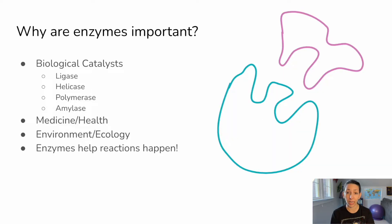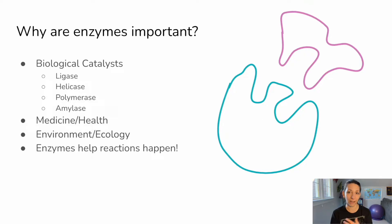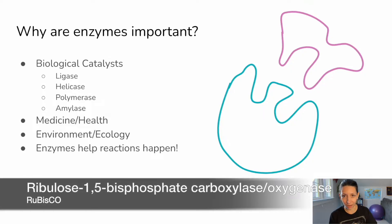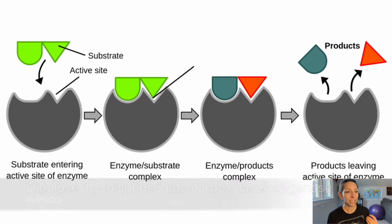One key way to recognize an enzyme, even if you've never seen it before, is the letters A-S-E. Now not every enzyme ends in the letters A-S-E, but many do. Even things like rubisco — their full name is a word that ends in A-S-E as well.